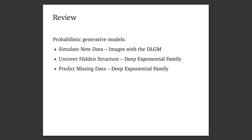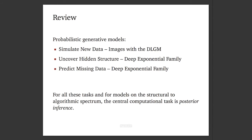So let me review what I've covered. With probabilistic models you can simulate new data — we saw that with the deep latent Gaussian model and the digit images. We also saw how you can find hidden structure, like the overlapping representation of factors in text. And you can predict missing data, which is that perplexity table. But for all these tasks, on the structural to algorithmic spectrum, the central computational task is posterior inference.